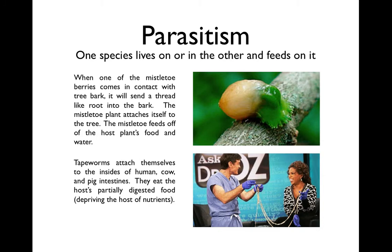The last form of symbiosis is parasitism. This is where one species lives on or in the other and feeds on it. The parasite definitely gets the benefit, and the host is most of the time being hurt. For example, when a mistletoe berry comes in contact with tree bark, it sends out a thread-like root into the bark, attaching itself to the tree and feeding off the host plant's food and water. Another example is a tapeworm — a human parasite. They attach themselves to the insides of human, cow, and pig intestines and eat the partially digested food, robbing the host of nutrients.